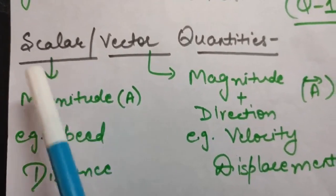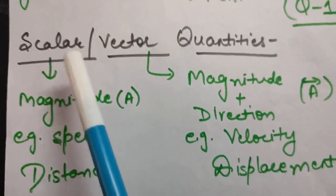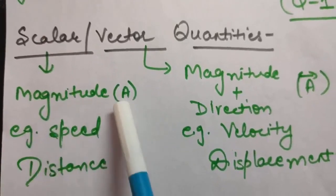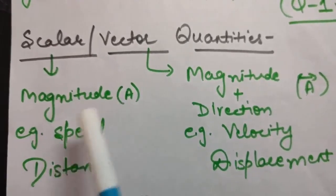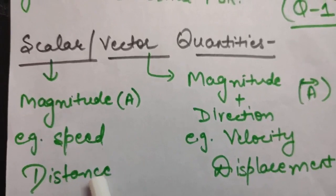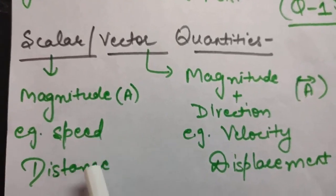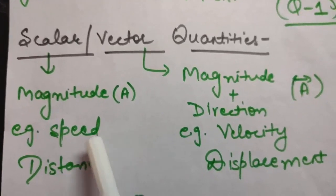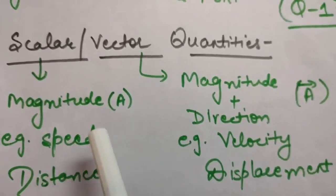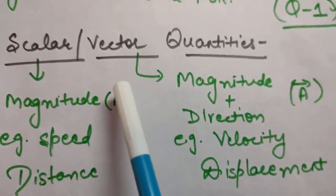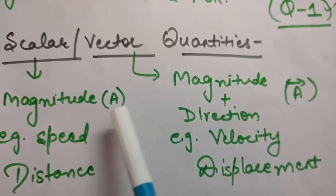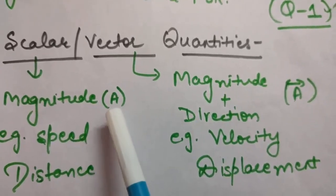The scalar quantity is that which has only magnitude. For example, speed and distance have only magnitude, so they are scalar quantities. To represent a scalar quantity, we can take any variable - a, b, c, or anything.